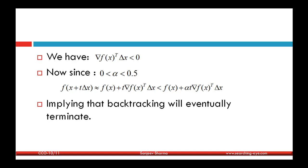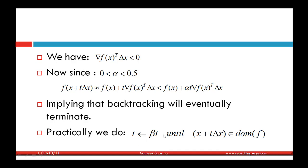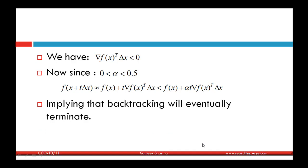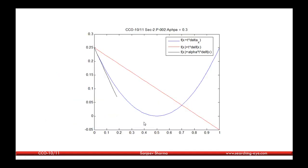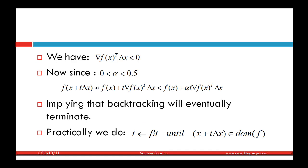This implies the backtracking line search will eventually terminate — there exists a t such that f(x) + α·t·∇f(x)ᵀ·Δx ≥ f(x + t·Δx). Additionally, x + t·Δx must remain in the domain of the function. In practice, we first decrease t by β until x + t·Δx is feasible, and once it is feasible we start checking the exit condition.